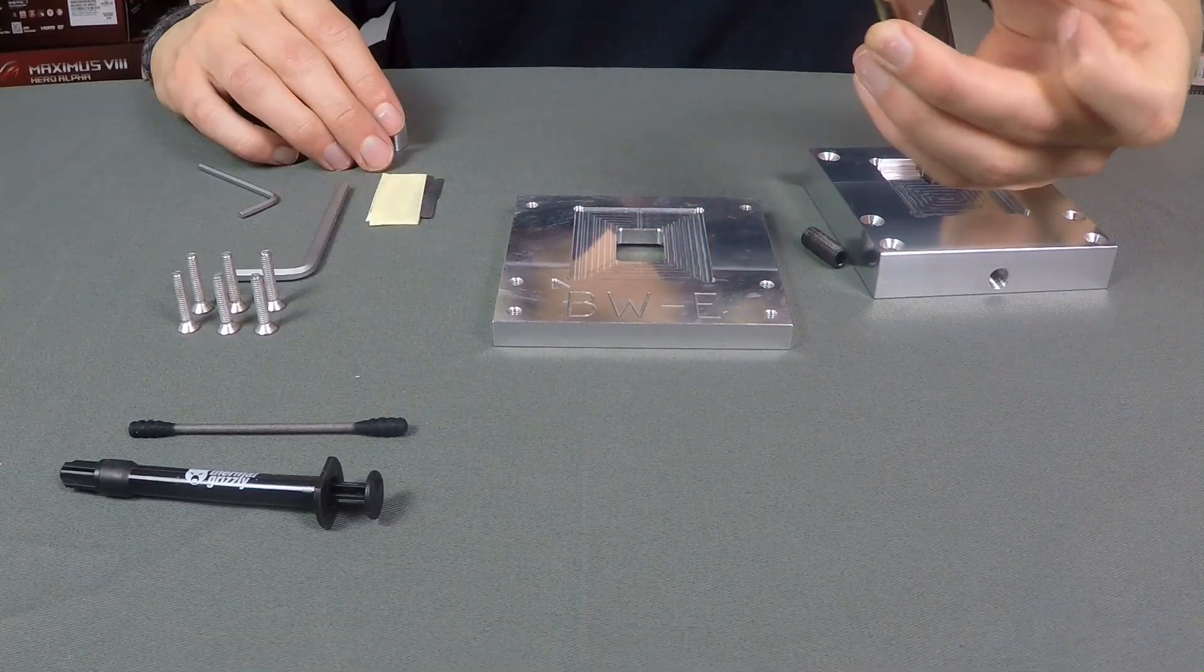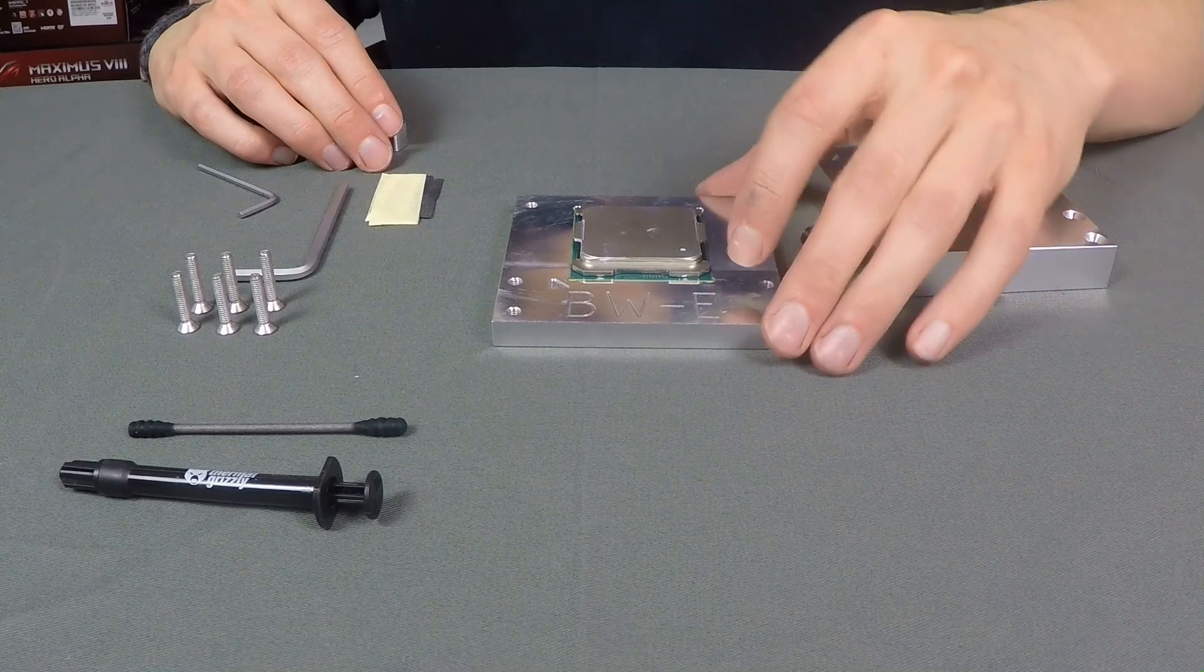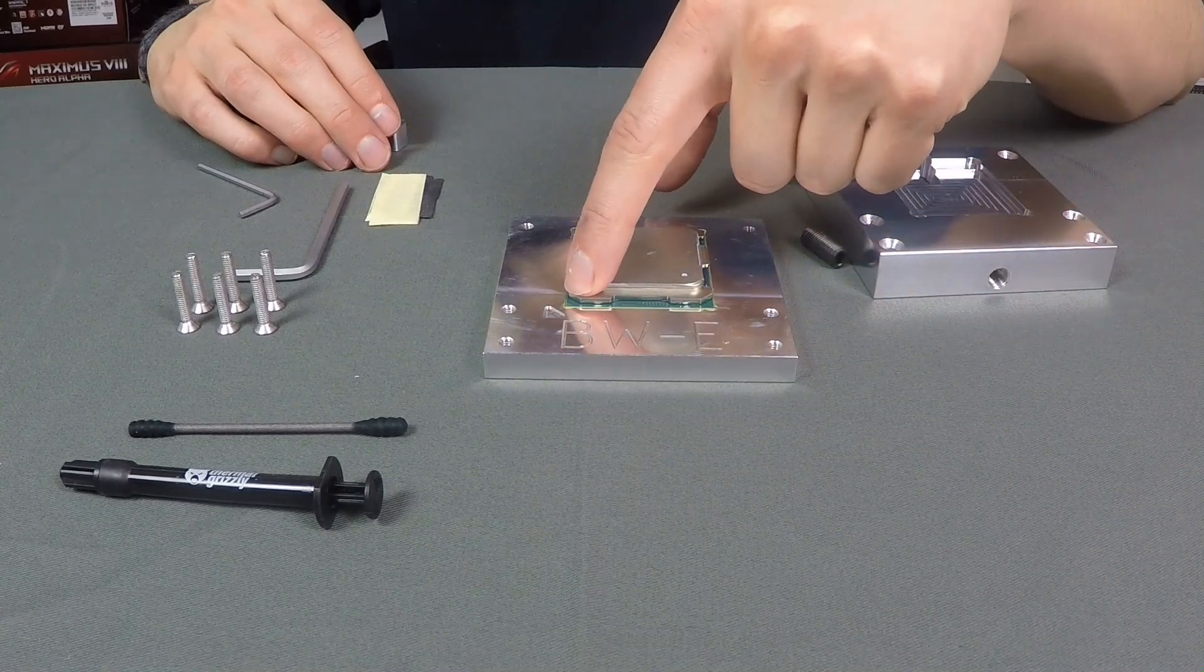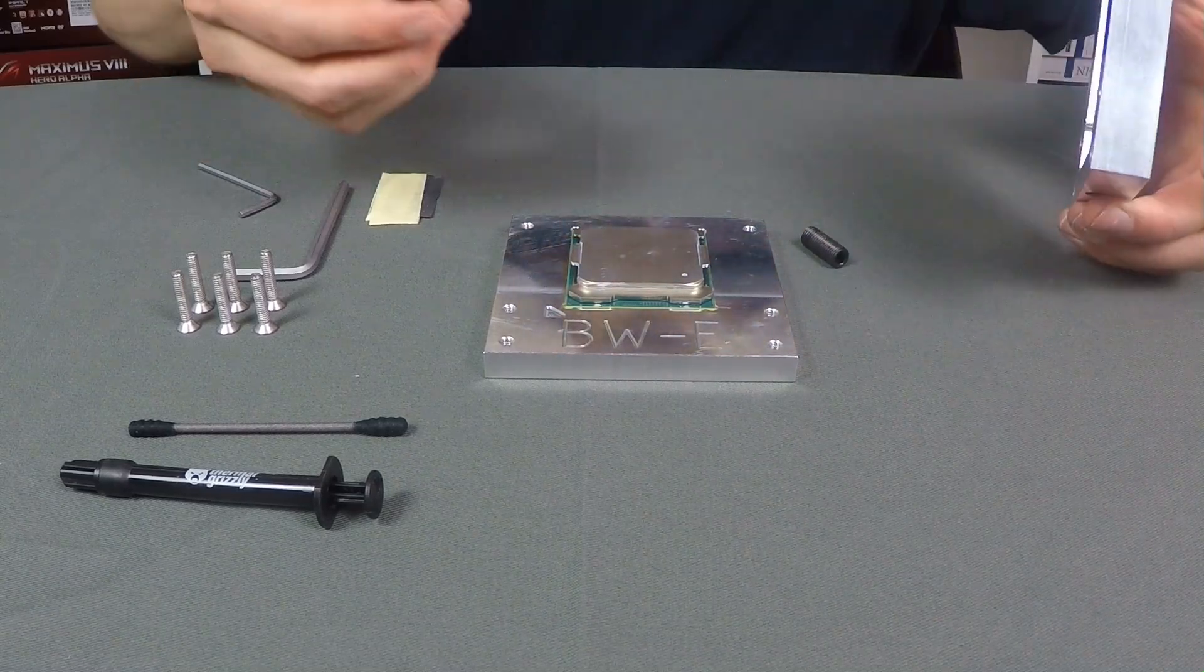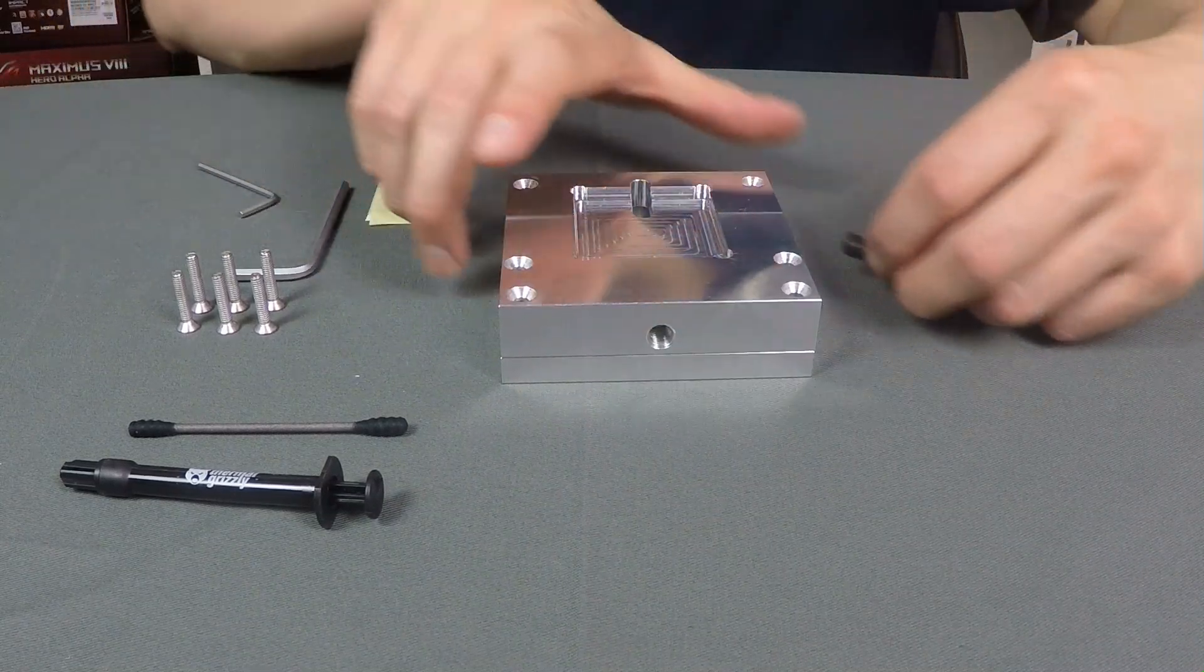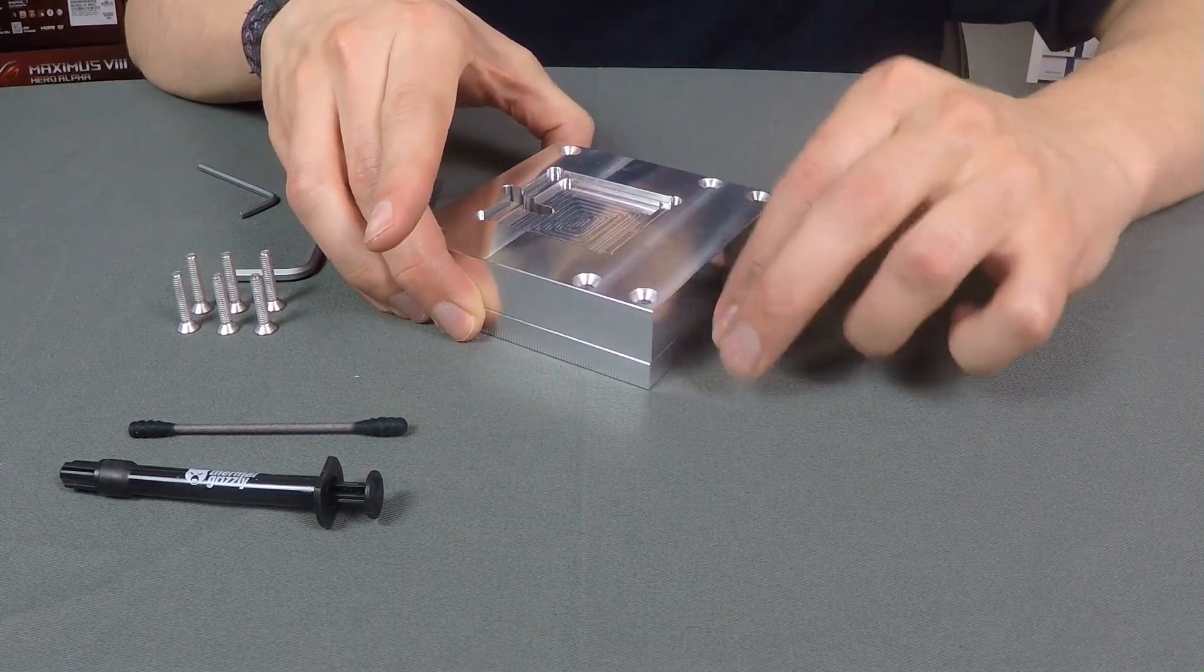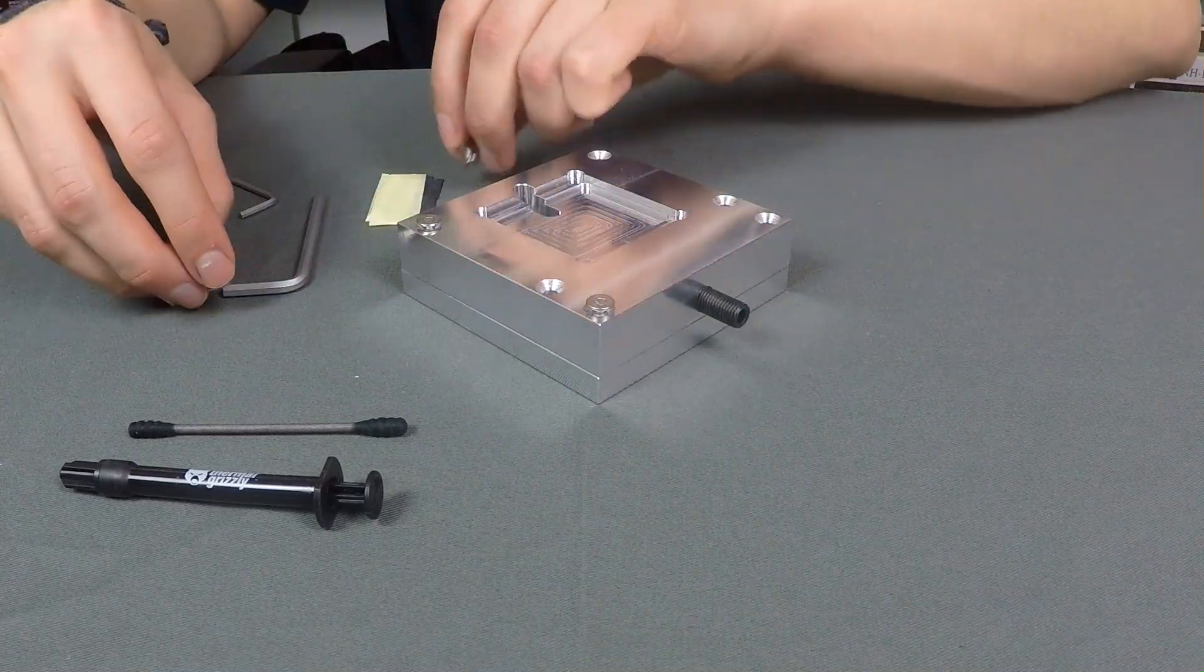We'll take the CPU and place it inside the socket which supports Broadwell-E and Haswell-E. You can see there is a triangle on the corner which shows how to put the CPU in for the first movement. Take the slider and place it in front of the CPU and place the top part above it. Now use the main screw and screw it in a little bit, and take the hex screws to fix the top part above the socket.